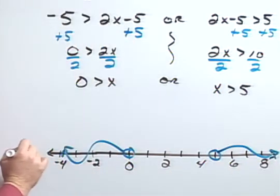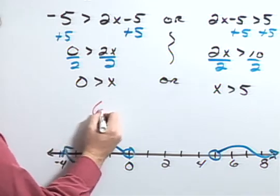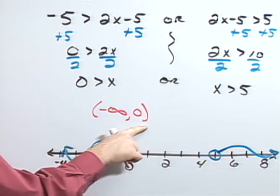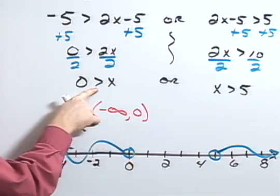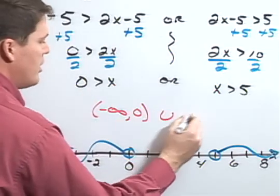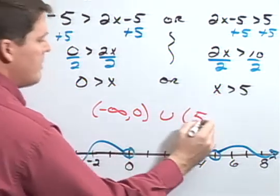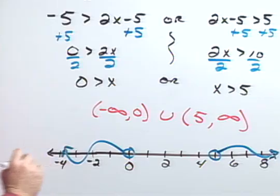Writing this in interval notation then would go from negative infinity to 0 with a parenthesis because it's non-inclusive, union 5, again the parenthesis, comma to infinity.